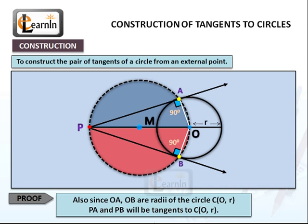Also, since OA and OB are radii to the circle C, PA and PB will be tangents to C.